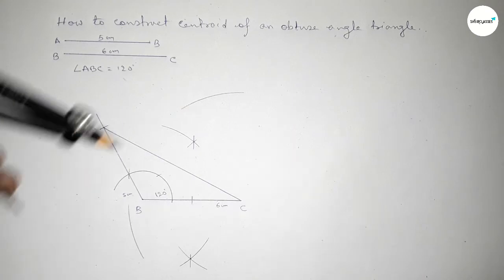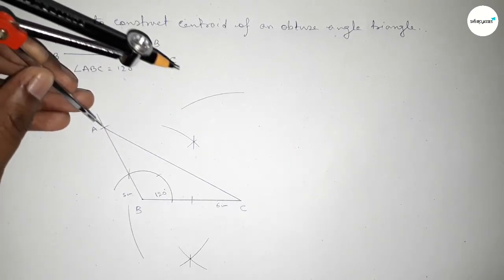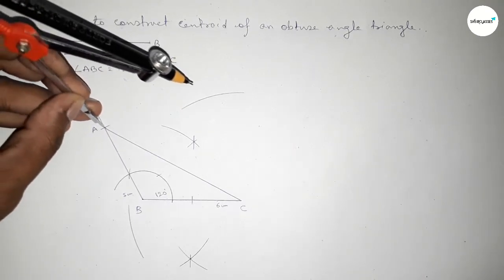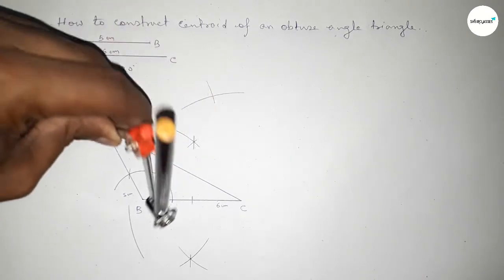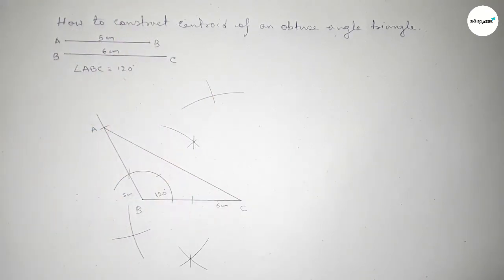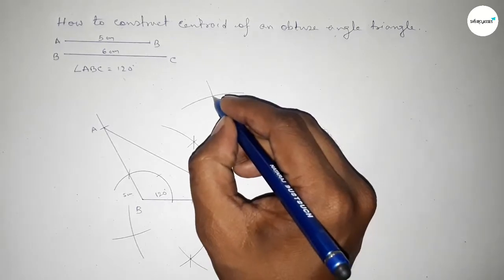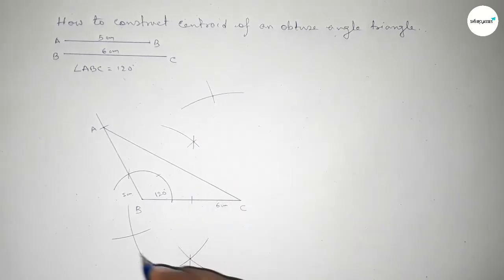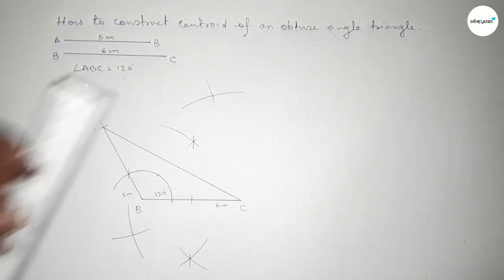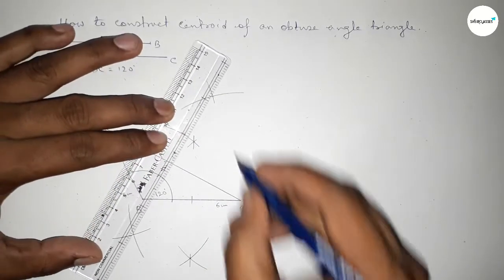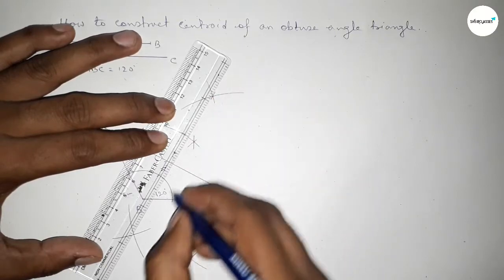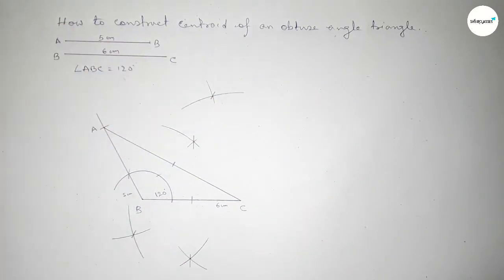Next, bisecting line AC. Putting the compass at A and taking a length greater than half of AC, drawing an arc. With the same length, putting the compass at C and cutting arcs so both curves intersect at two points. Joining these points gives a line that bisects AC at its midpoint.